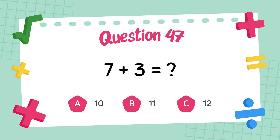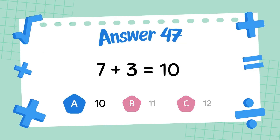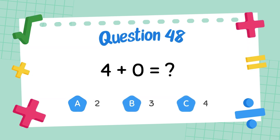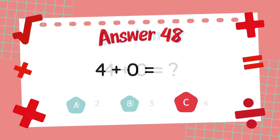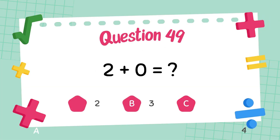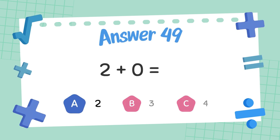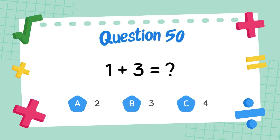What is 7 plus 3? The answer is 10. The answer is 8. What is 4 plus 0? The answer is 8. The answer is 8. What is 4 plus 0? The answer is 2. What is 1 plus 3?